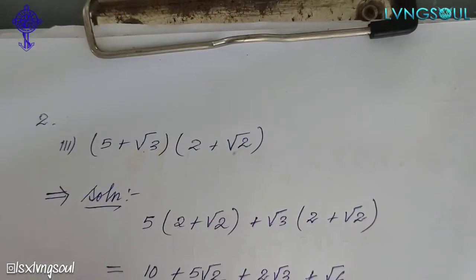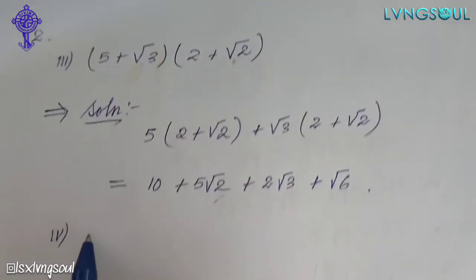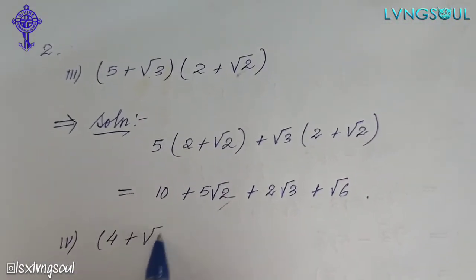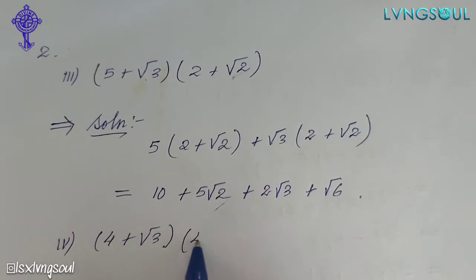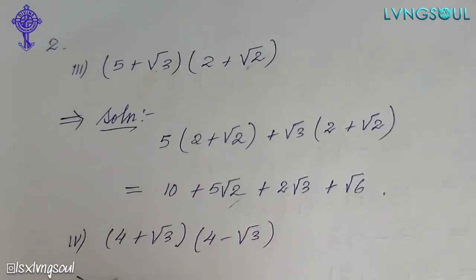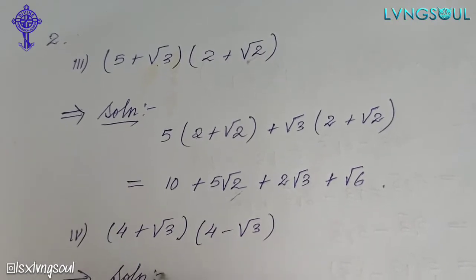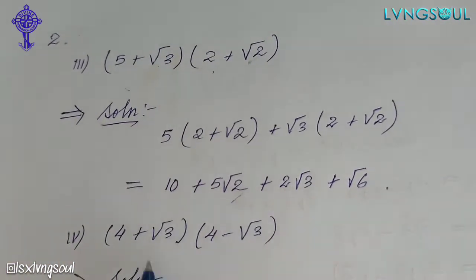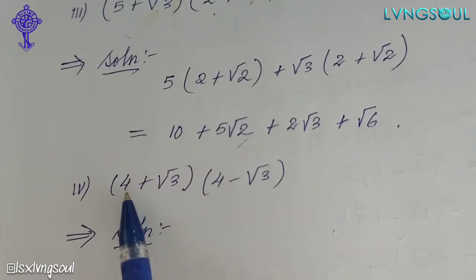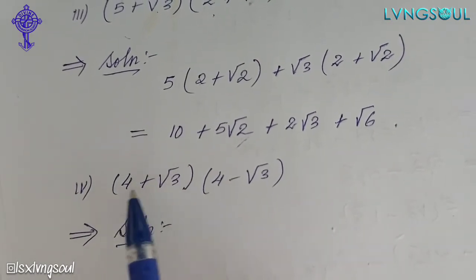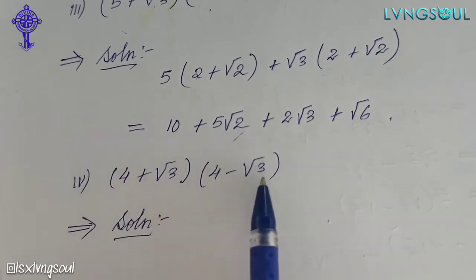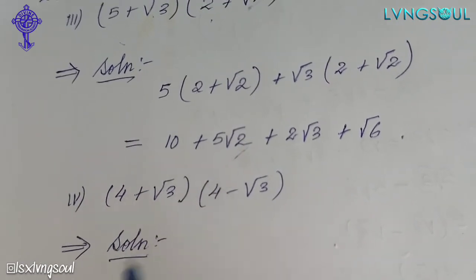Sub number 4. Sub number 4 is 4 plus root 3 into 4 minus root 3. When you get 1, we call it a sign. So we call it a rational number. This is a rational number 4, and a rational number root 3. This is called an algebraic formula.